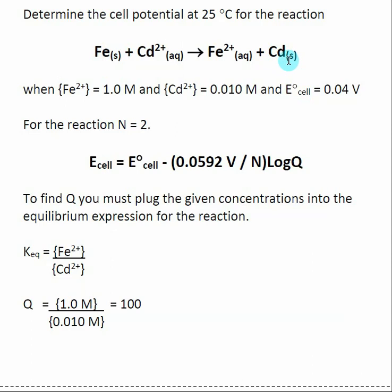Iron solid and cadmium solid do not show up in our equilibrium expression. So it's just the concentration of Fe²⁺ divided by the concentration of Cd²⁺. Both of those numbers were given. We're not at standard conditions, so we find Q. In this case, Q equals 100.